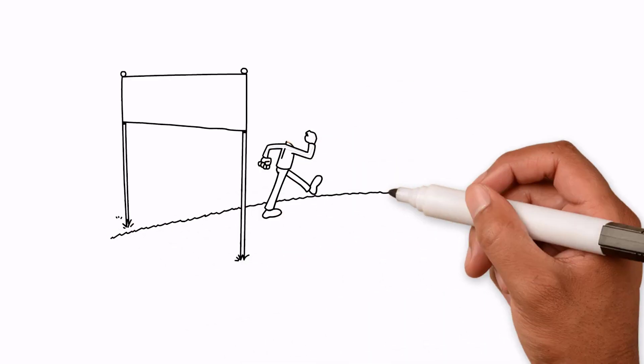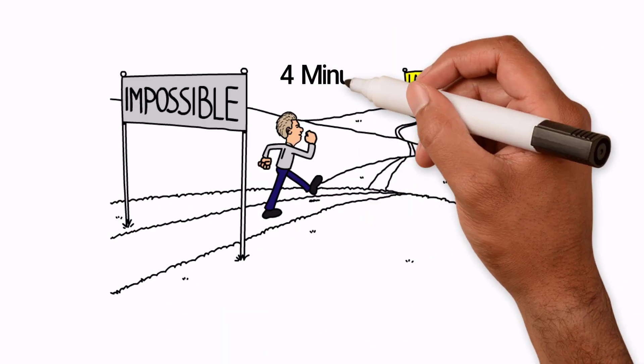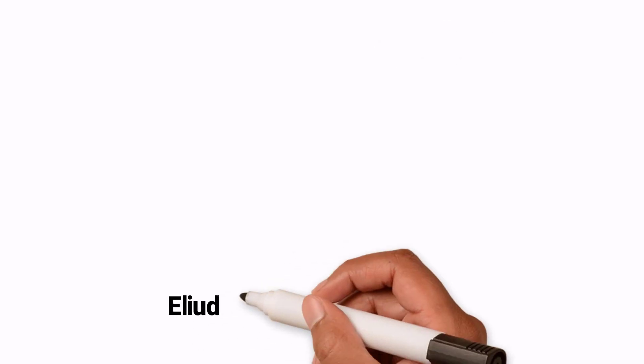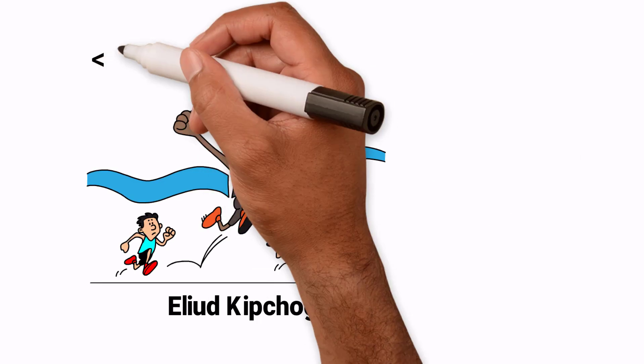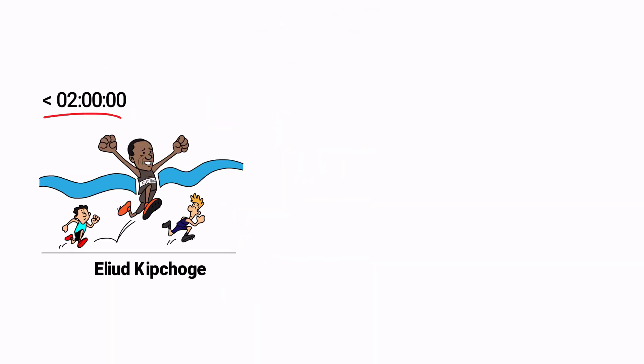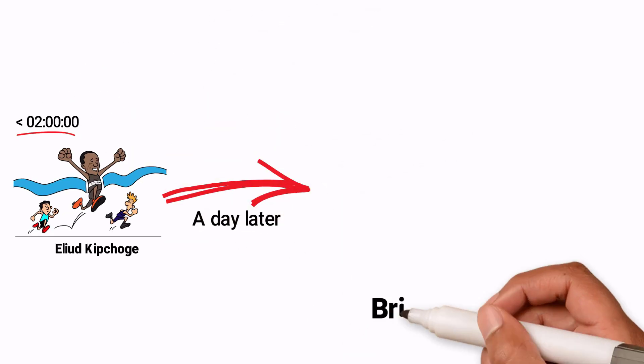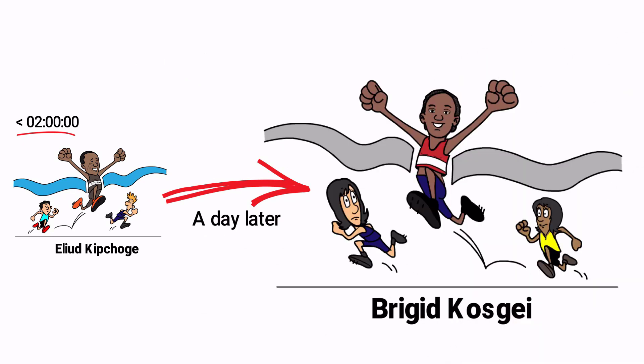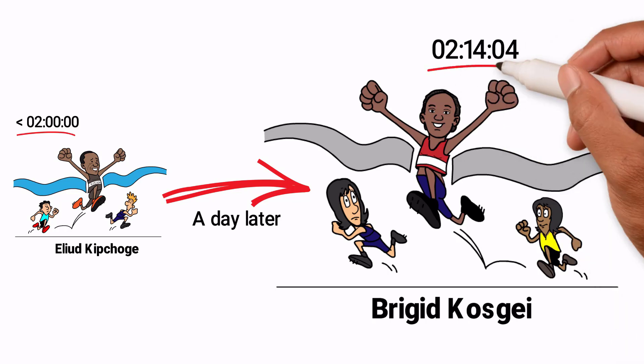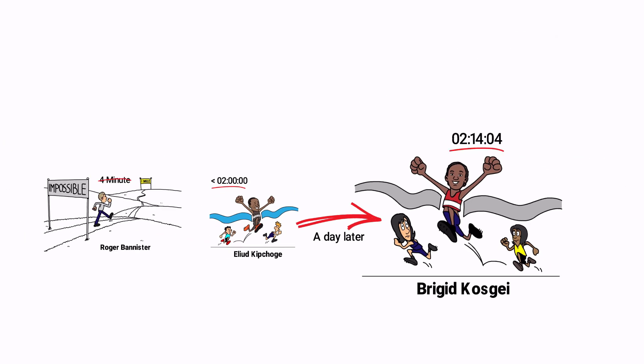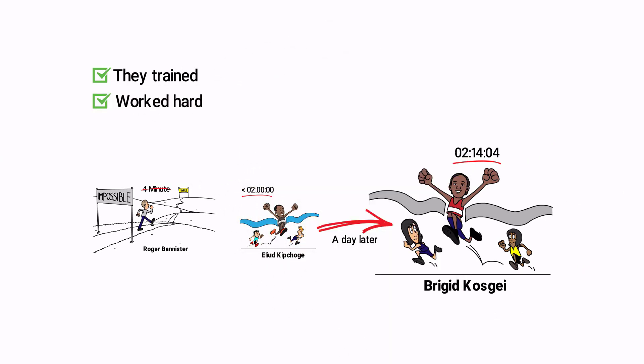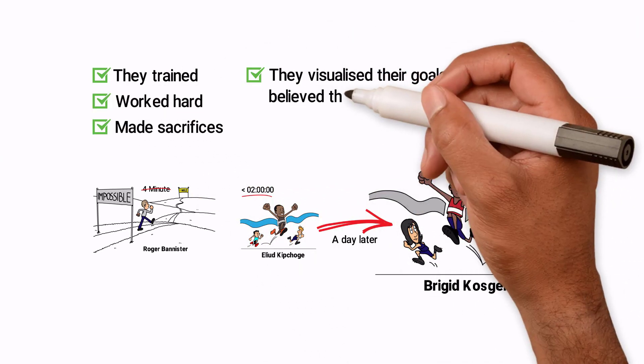He's right, people once thought it impossible that a four minute mile could be broken, but Roger Bannister proved them wrong. Eliud Kipchoge ran a marathon in under two hours, another feat that once seemed impossible. A day after that, Brigid Kosgei broke Paula Radcliffe's women's marathon record, running it in two hours, 14 minutes and four seconds. We can learn a lot from all of these athletes. They trained, worked hard, made sacrifices, but more importantly, they visualised their goals and believed they could do it.